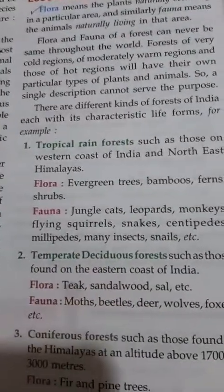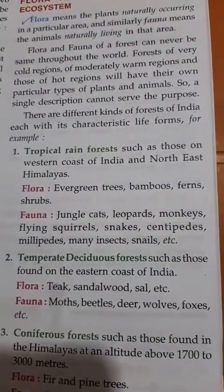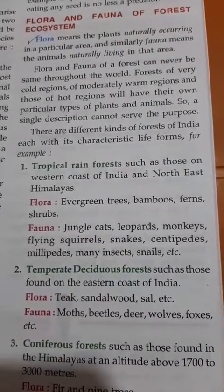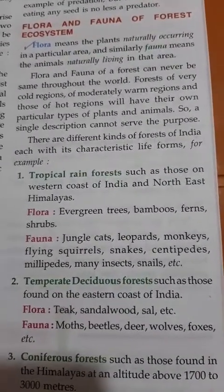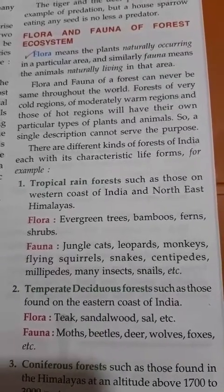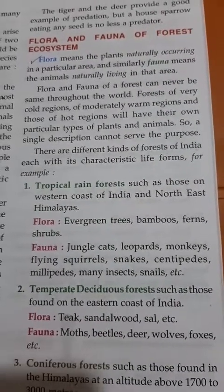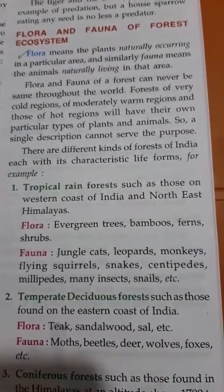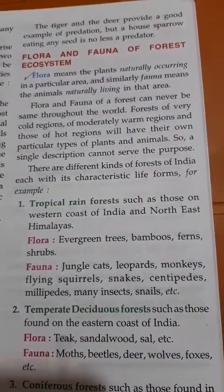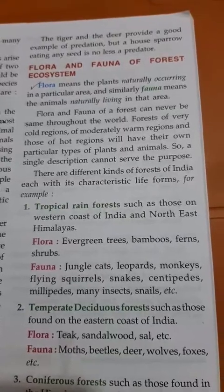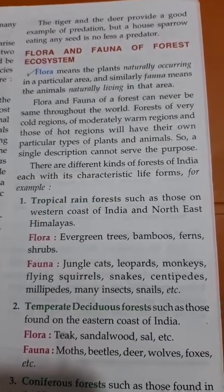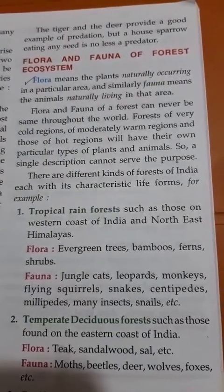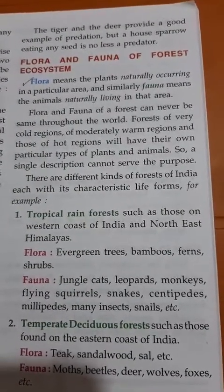Next is the temperate deciduous forest, found on the eastern coast of India. The flora includes teak, sandalwood, and sal trees. The fauna includes moths, beetles, deer, wolves, and foxes — just a few to mention. These are the flora and fauna of the temperate deciduous forest.